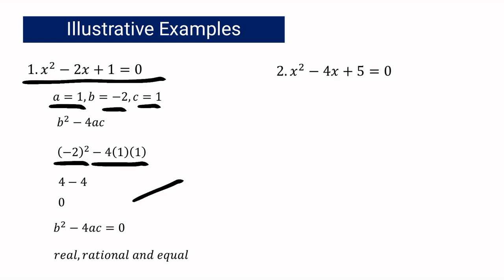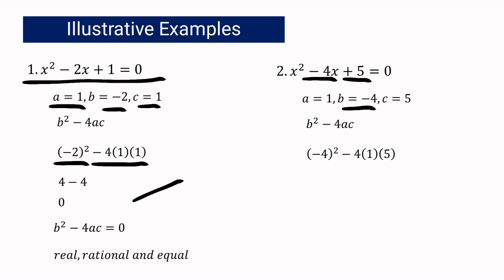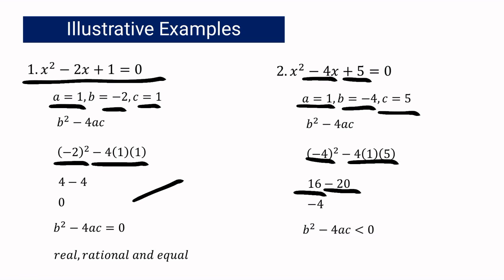For the second example: x squared minus 4x plus 5 equals 0. Here a is 1, b is negative 4, and c is 5. Using b squared minus 4ac: negative 4 squared minus 4 times 1 times 5 gives 16 minus 20, which equals negative 4. Since the discriminant is less than 0, we can conclude that the roots are unreal and unequal.